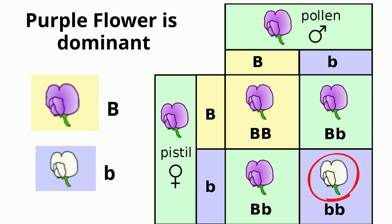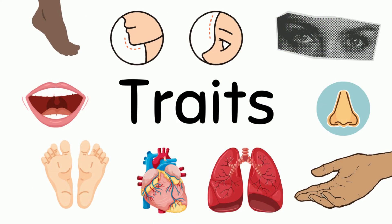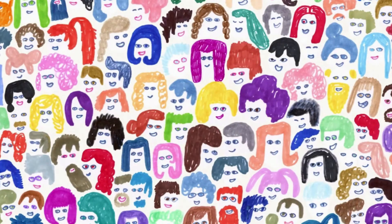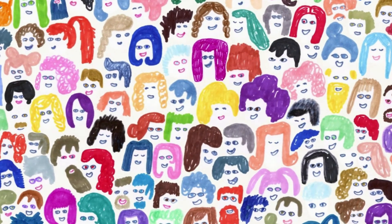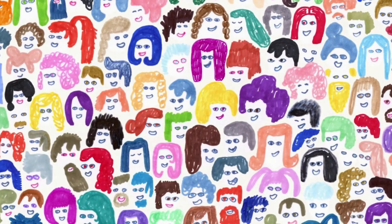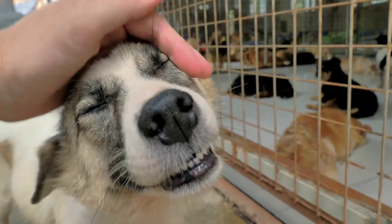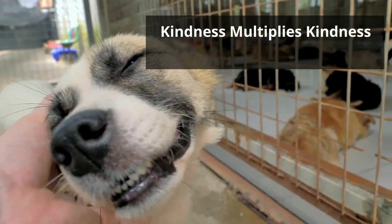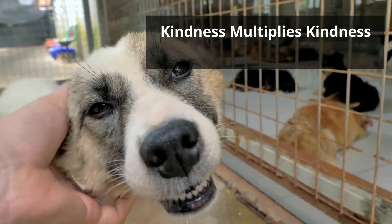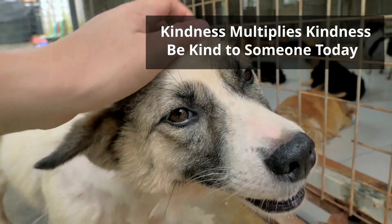So in summary, traits are characteristics that are passed from one generation to the next, and alleles are responsible for the genetic variation that we see in populations. Thanks for watching, and remember, kindness multiplies kindness. Be kind to someone today.